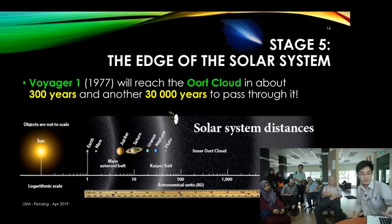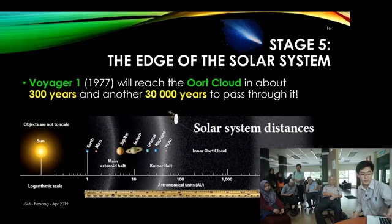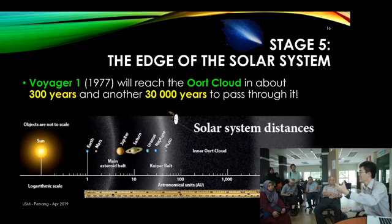How long will it take to reach the Oort Cloud? It will reach the Oort Cloud in about 300 years — not within a single human's lifetime. By that time it has lost all its functions — it cannot take pictures or send signals back to us. Unfortunately, it takes another 30,000 years to get past the entire Oort Cloud. That's about 100 times the time it takes just to get there. So are you getting the picture? We are only at stage 5 out of 9, already halfway through, and we cannot reach there within our lifetime.